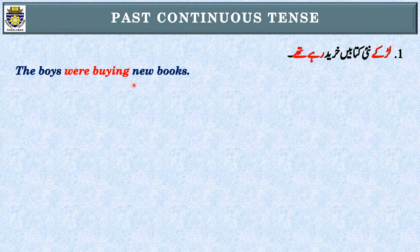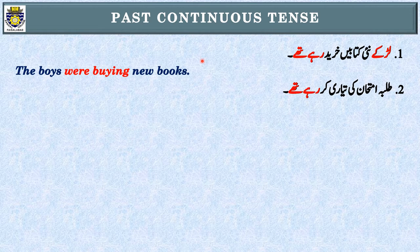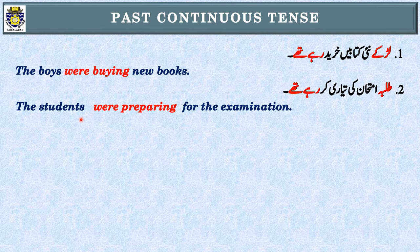Sentence number two: طلبا امتحان کی تیاری کر رہے تھے۔ First step: identification of tense — 'رہے تھے' بتاتا ہے کہ یہ Past Continuous Tense ہے۔ Step two: subject — 'طلبا'، جس کی English 'students' ہے۔ Students plural ہے، اس لیے were آئے گا۔ Third step: The students were preparing for the examination.